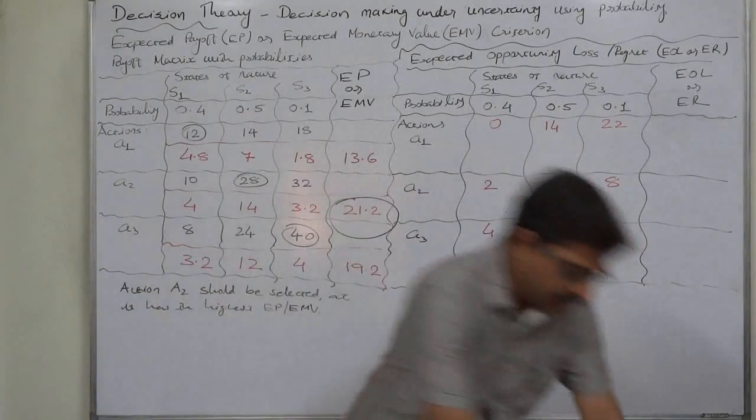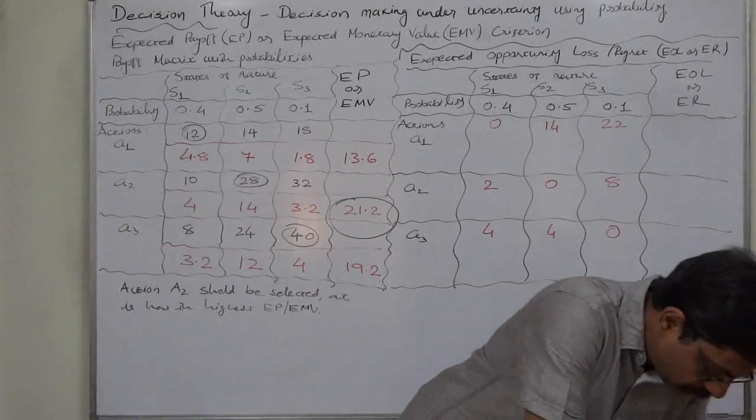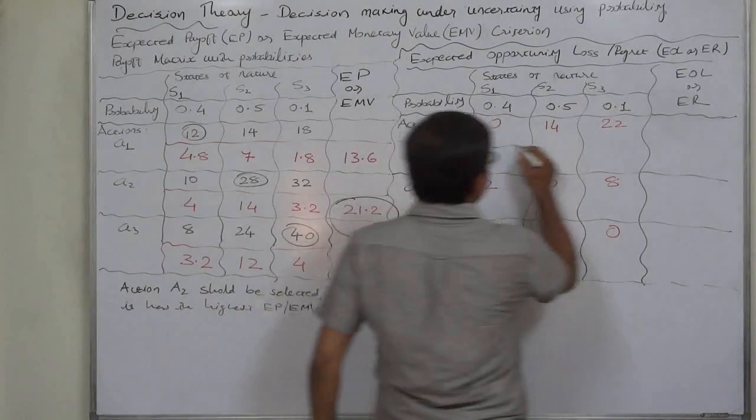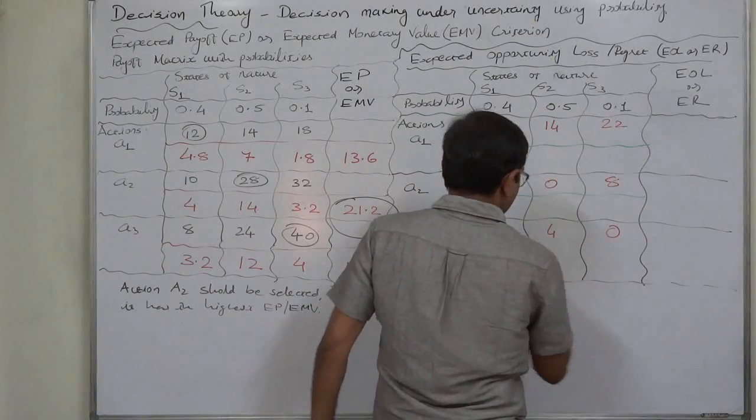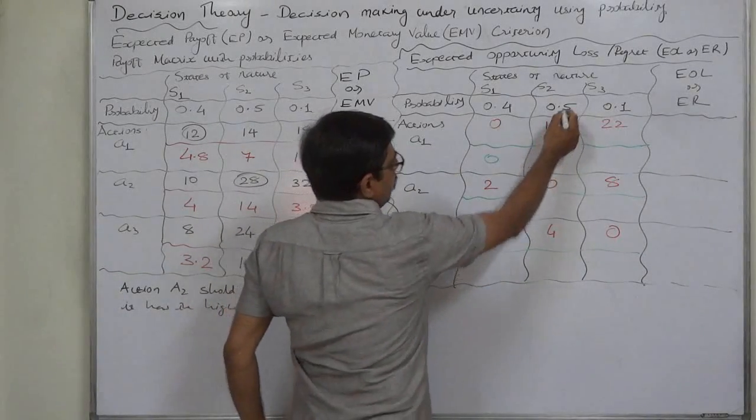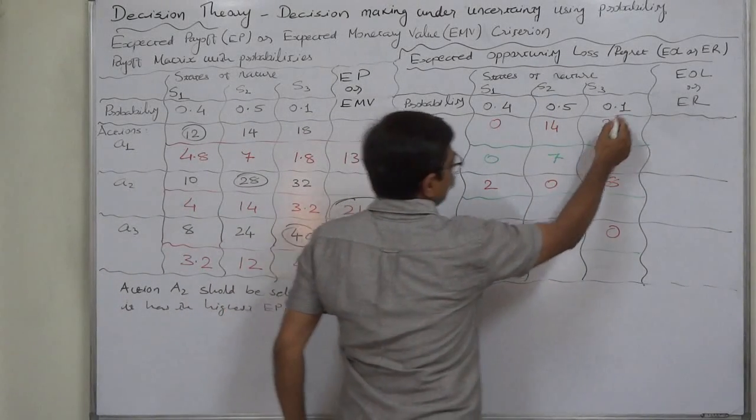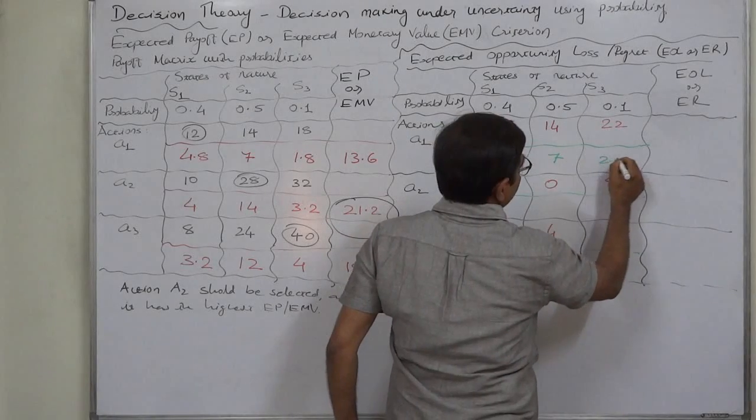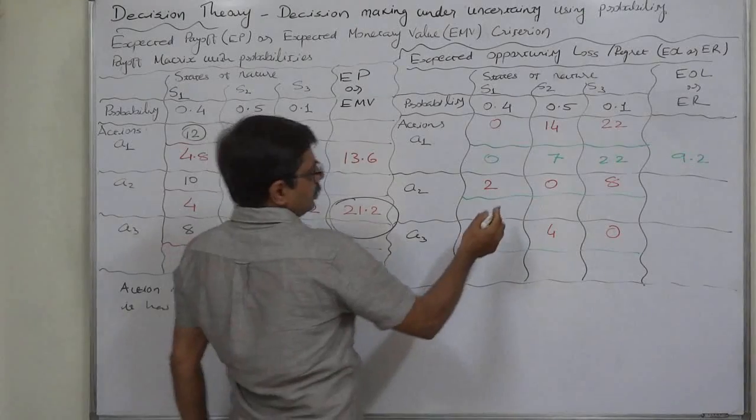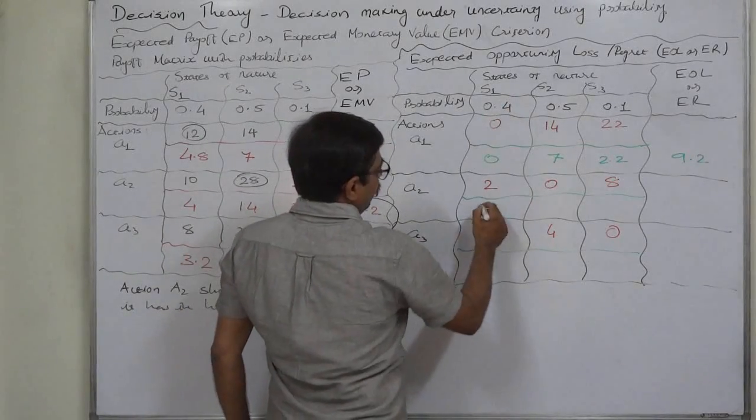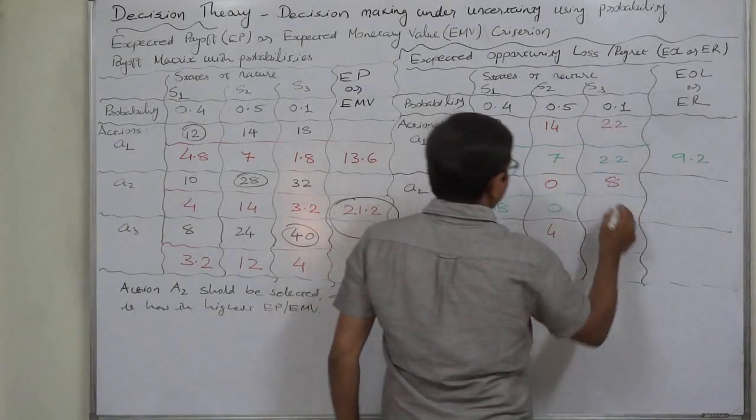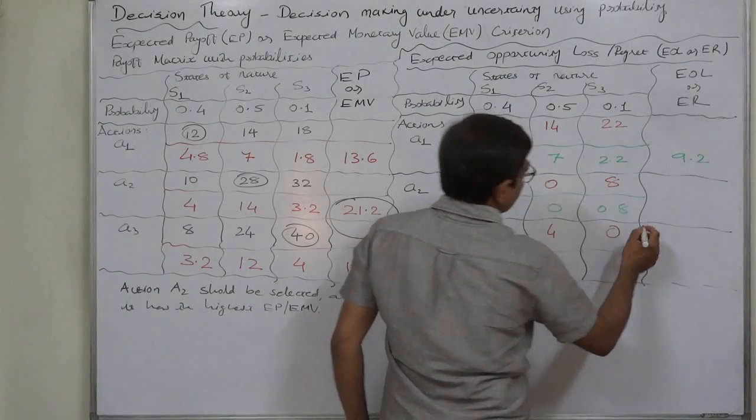0 into 0.40, 14 into 0.57, 22 into 0.1, equals 2.2. It comes to 9.2. 2 into 0.4 is 0.8, 0 into 0.50, 8 into 0.1 is 0.8, total is 1.6.